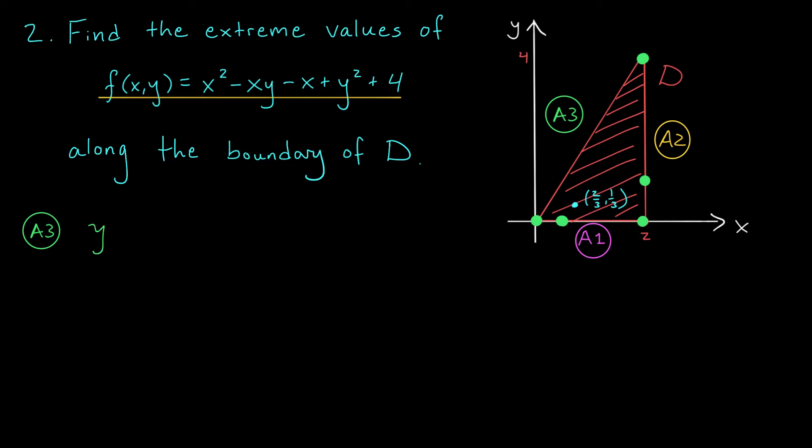Its equation is y equals 2x. And here, we allow x to go between 0 and 2. To see what our function is doing on this line, we're going to plug in 2x for y. We get the equation f(x,2x) is equal to x squared minus x times 2x minus x plus 2x squared plus 4.